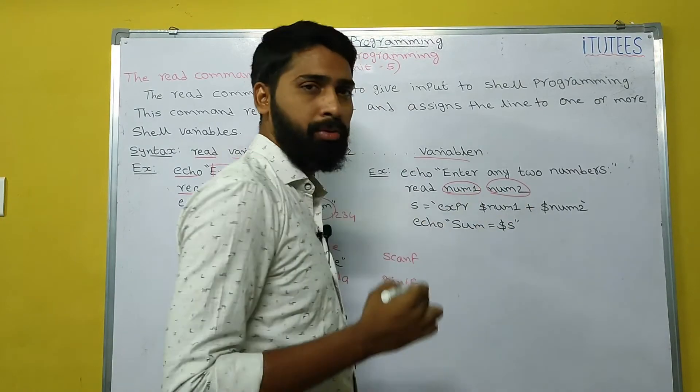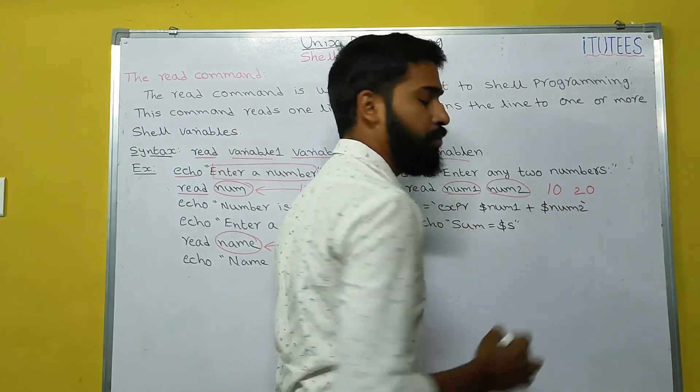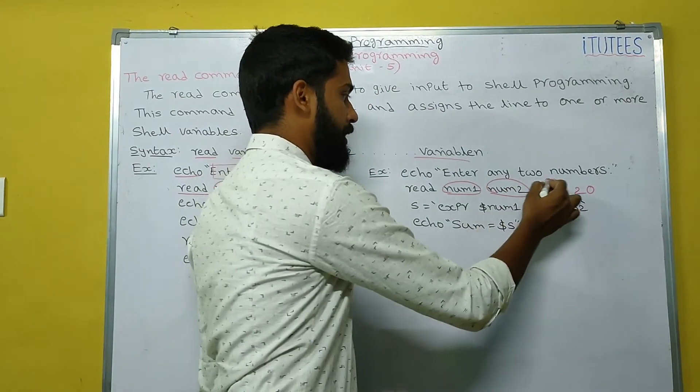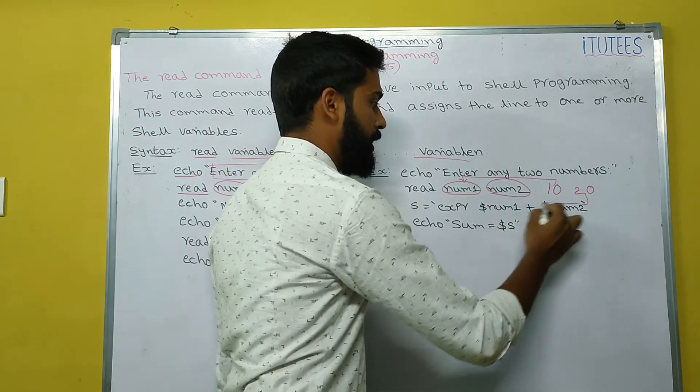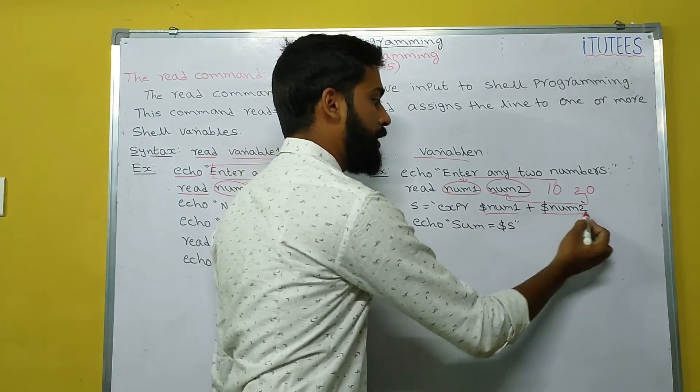Now, enter any two numbers. Read num1, num2. That means in next line, I am going to enter 10 space 20. Now, the 10 is assigned to num1, the 20 is assigned to num2. Now, we are going to perform arithmetic operation.